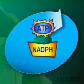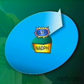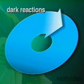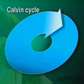The high energy molecules of ATP and NADPH formed in the light reactions are then used in the dark, or light independent, reactions. These involve a series of chemical reactions called the Calvin cycle.